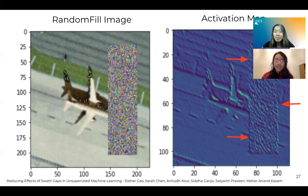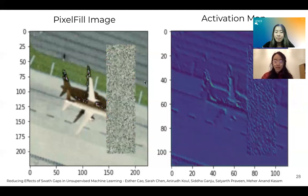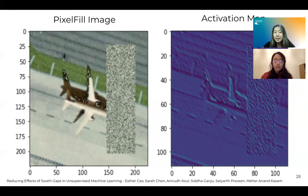The next filling method we decided to implement was to try to get rid of these blatant borders. What if instead of random RGB pixels, we took pixels from the very image itself? This way, the colors of the filled-in swath gap would match the scheme of the background image, making the swath have a lesser effect on the activation map. As you can see with the results on screen, there is in fact a lesser effect on the activation maps — but of course, we still weren't satisfied.